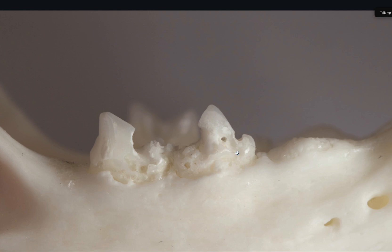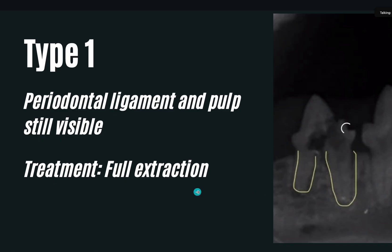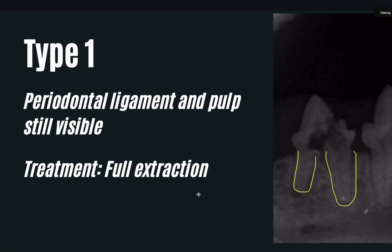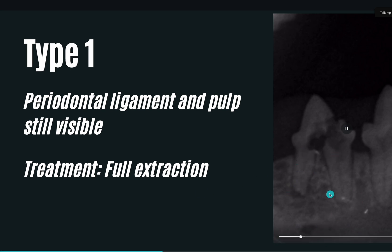This is what it looks like in a skull - a very nice image of what tooth resorption does to a tooth. There are three types of tooth resorption. Type 1 is where the periodontal ligament and pulp is still visible. You can see the ligament here and the pulp is right here in the middle. When you see this dark area here, this is tooth resorption with intact roots.